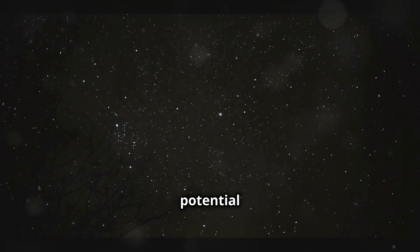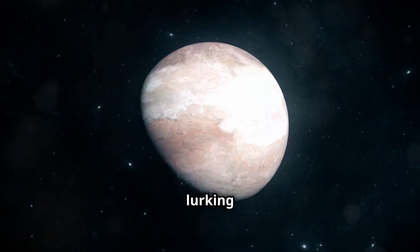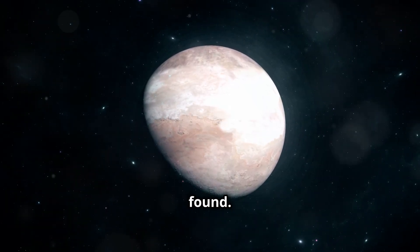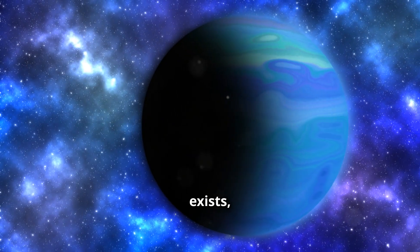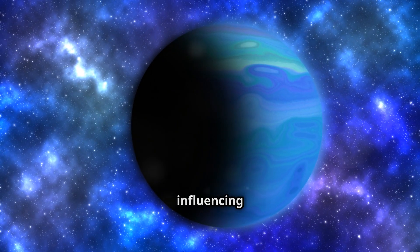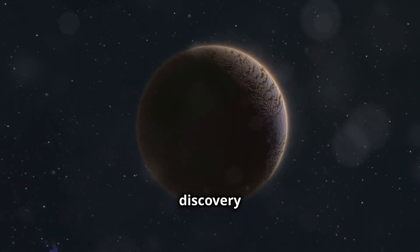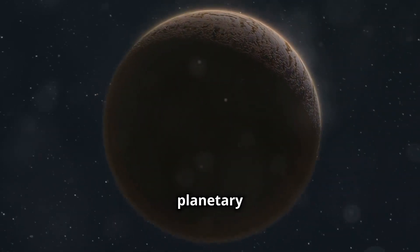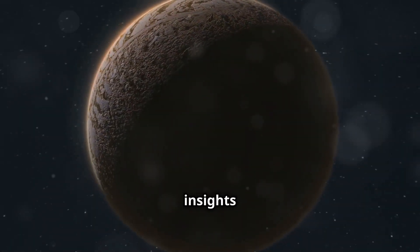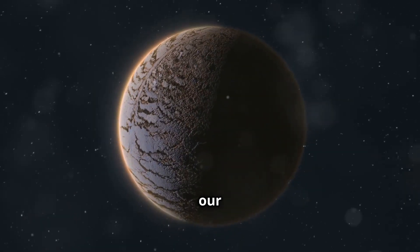A hidden giant, lurking in the darkness, waiting to be found. Planet Nine, if it exists, could be a massive world, influencing the orbits of distant objects in the Kuiper Belt. Its discovery would not only add a new member to our planetary family, but also provide insights into the dynamics and history of our solar system.